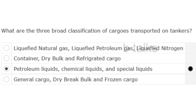What are the three broad classifications of cargos transported on tankers? Options: Liquefied natural gas, liquefied petroleum gas, liquefied nitrogen; Container, dry bulk and refrigerated cargo; Petroleum liquids, chemical liquids, and special liquids; General cargo, dry break bulk and frozen cargo.